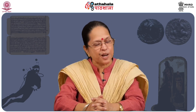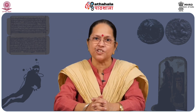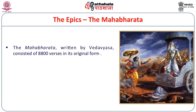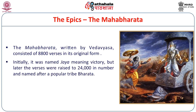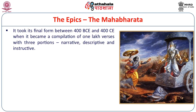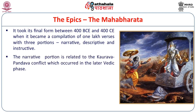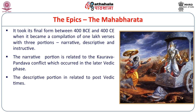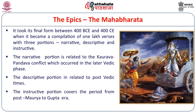Next we have the epics, which are important sources of history in general and social history in particular. The Mahabharata was written by Vedavyasa, consisting of 8,800 verses in its original form, initially named Jaya meaning victory. Later the verses were raised to 24,000 and named after the Bharata tribe. It took its final form between 400 BCE and 400 CE, becoming a compilation of one lakh verses with three portions: narrative, descriptive and instructive. The narrative portion relates to the Kaurava-Pandava conflict during the later Vedic phase; the descriptive portion relates to post-Vedic times; and the instructive portion stretches through the post-Maurya to the Gupta period.